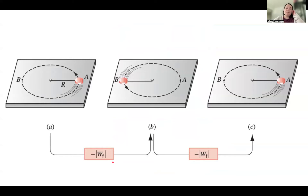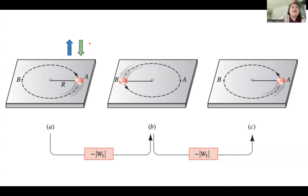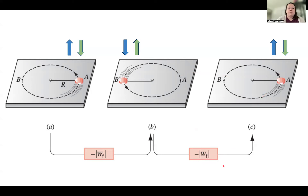Now consider a disk experiencing a friction force. A feature of friction is that it acts in the opposite direction of motion at any point. At point A, the tangential motion is upward and the friction force is downward. At point B, the direction of motion is downward and the friction force is opposite. So going from A to B gives negative work done by friction, and going from B back to A still gives negative work done by friction.